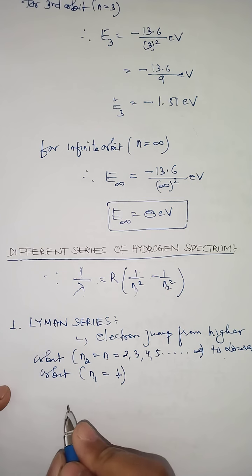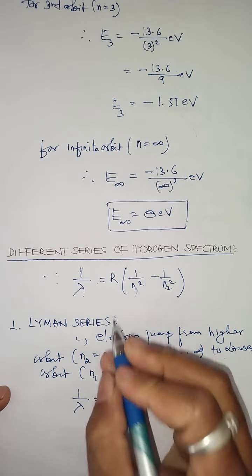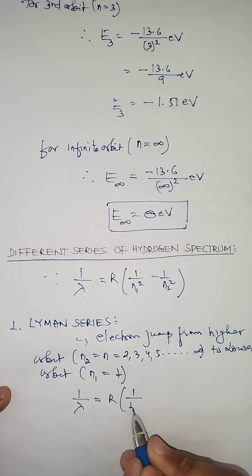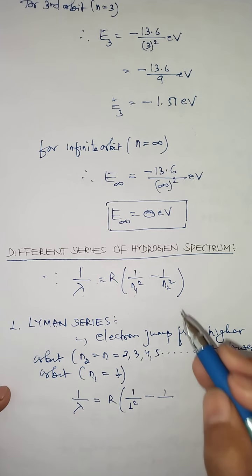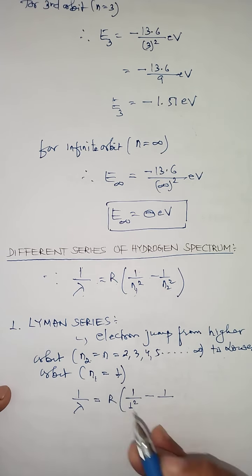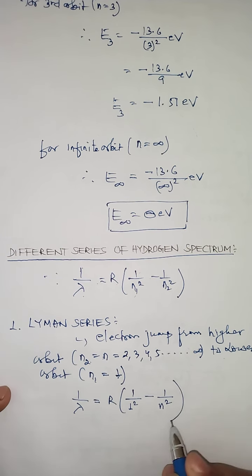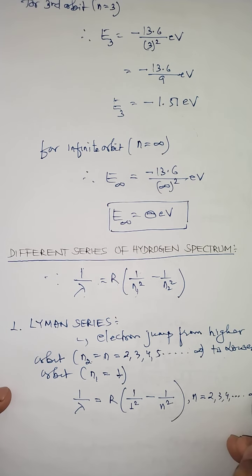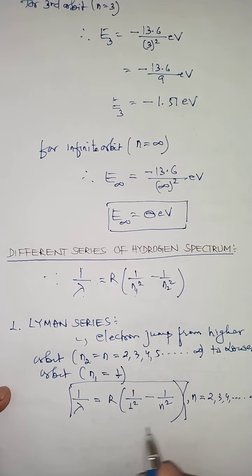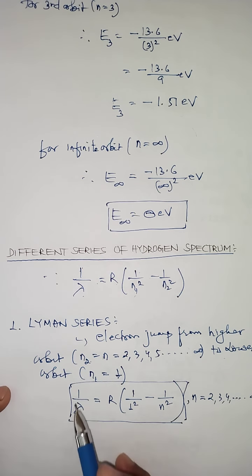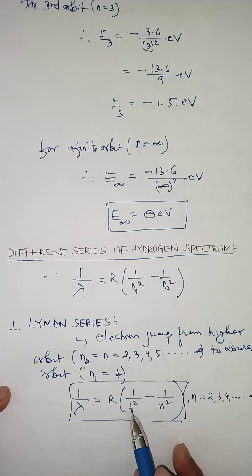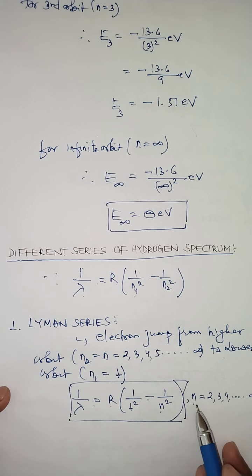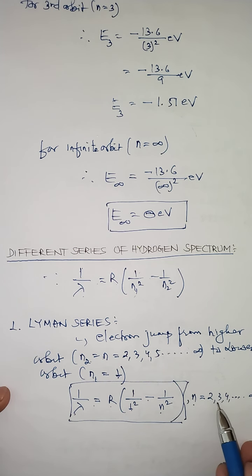For Lyman series, we write the same relation as: 1/λ = R(1/1² − 1/N²), where N starts from 2, 3, 4, and so on.